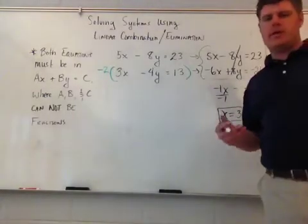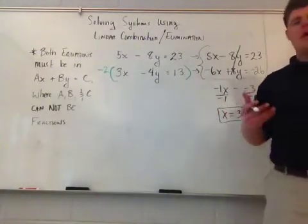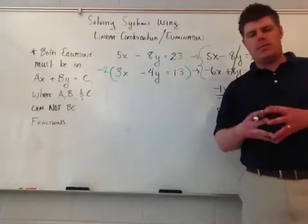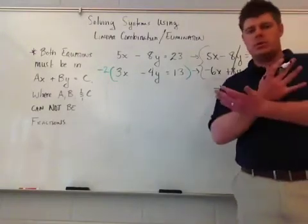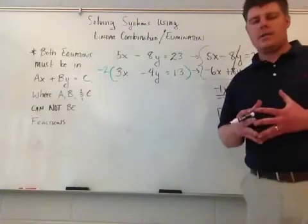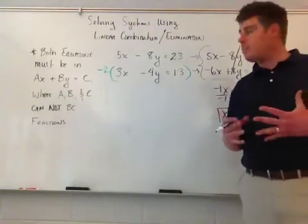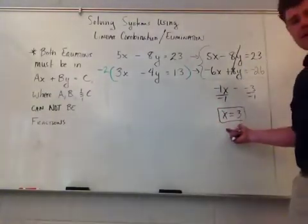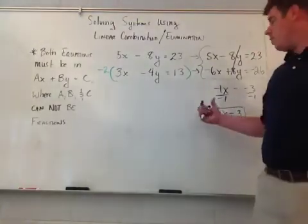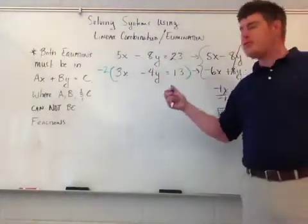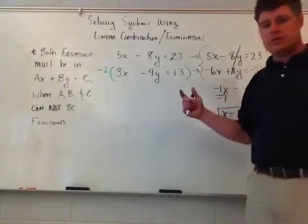Now that I have x equals 3, remember that I have to, for a system, come up with the coordinate pair, because I'm looking for where do these two lines cross. Where the lines cross is at a very specific coordinate pair. That's what I'm trying to find. Just because I found x doesn't mean I'm done. I need to go back and plug this into one of the original problems. You can choose one of these. It doesn't matter what equation you choose.